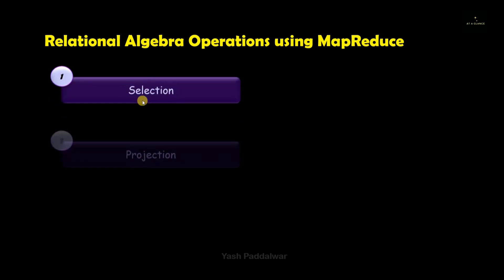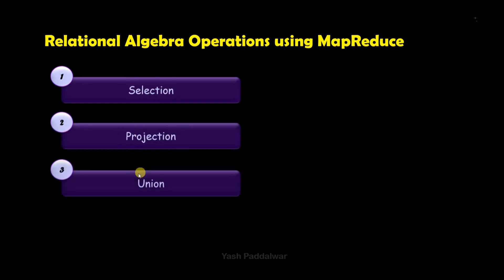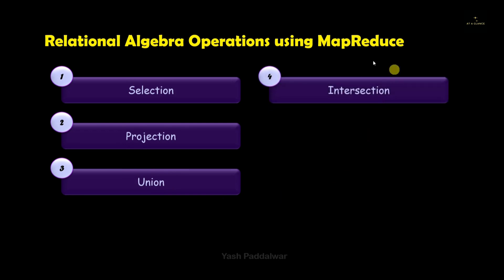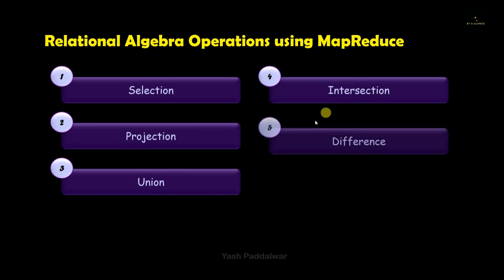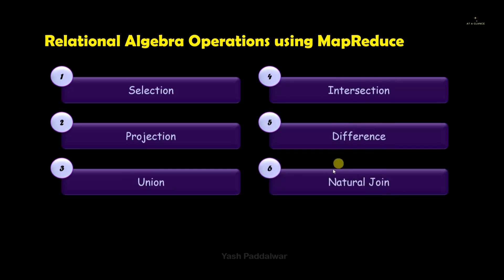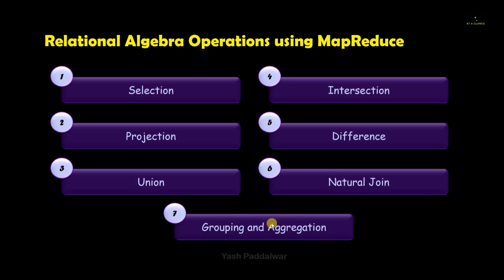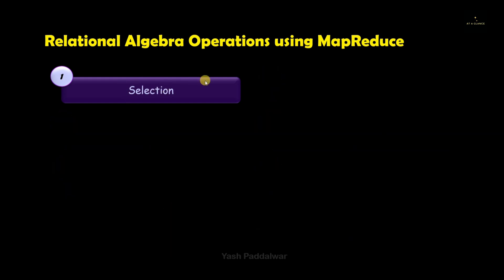Here are a few listed relational algebra operations — the most important ones. They are selection, projection, union, intersection, difference, natural join, and grouping and aggregation. You might have heard these in normal database management systems, but in this particular video we will be looking into them with the help of big data concepts — how MapReduce uses the mapping and reducing technique to carry out these operations for big data.